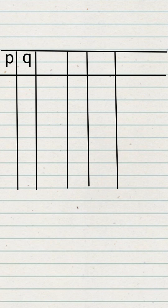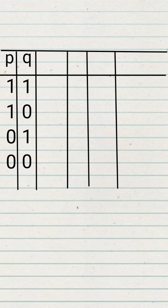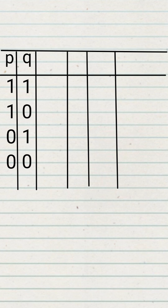First, construct the table with columns P and Q. The truth values for P will be 1, 1, 0, 0, and the truth values for Q will be 1, 0, 1, 0.